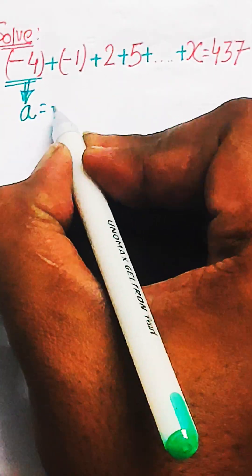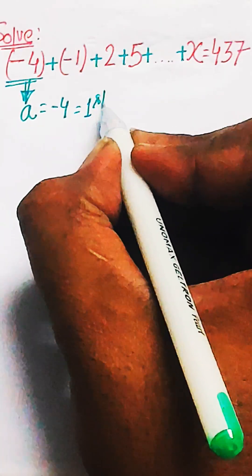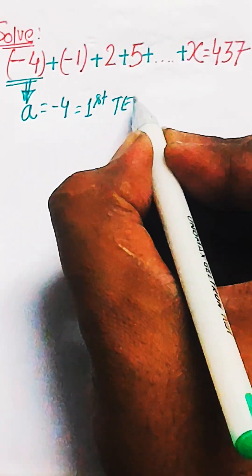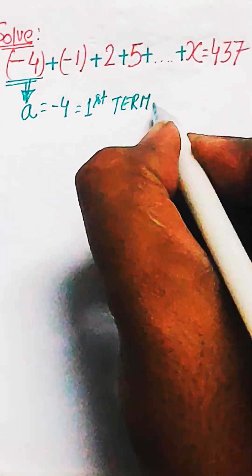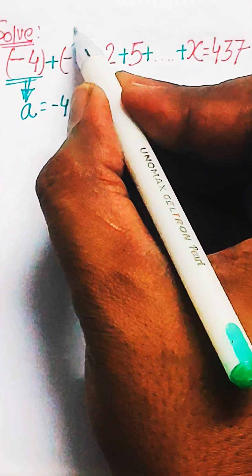So just by simple observation you can see the first term a is minus 4. So a equals minus 4 is the first term and now we need to find the common difference.